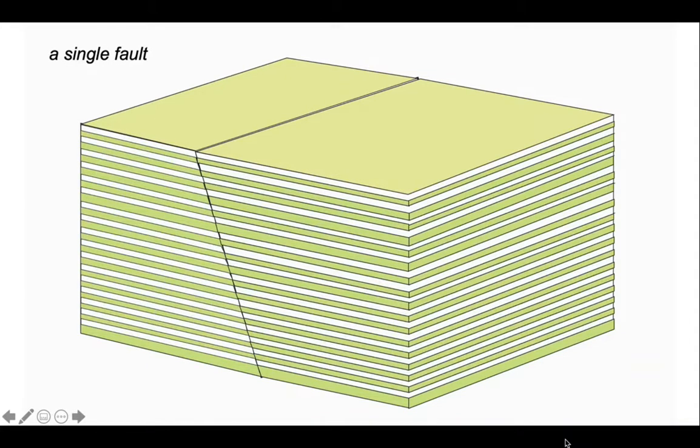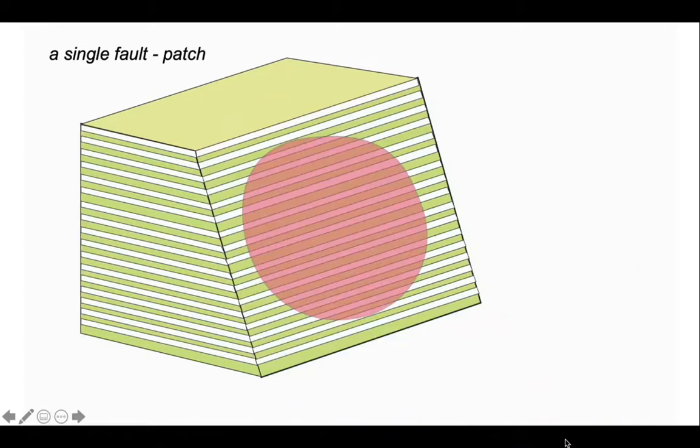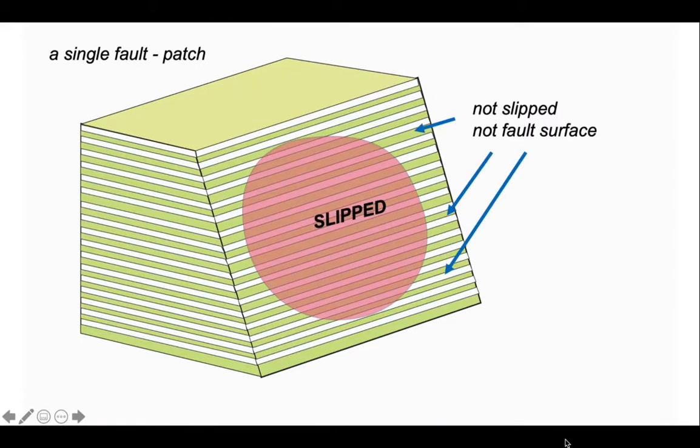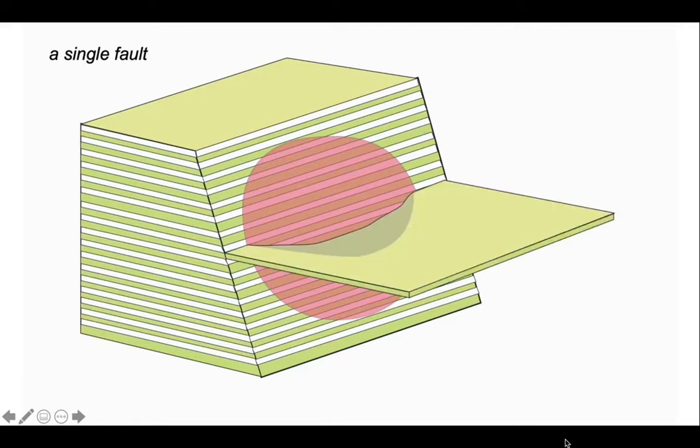So let's start off with a single fault surface. Here we have a block diagram with some stratigraphy which contains a fault surface. Let's pull it away and have a look. So here's the fault itself - the pink disk. This area has slipped and outside the pink patch we're assuming that the rocks have not slipped.